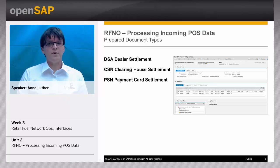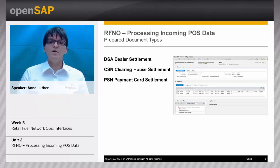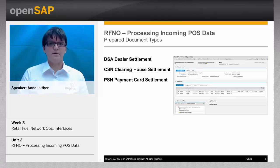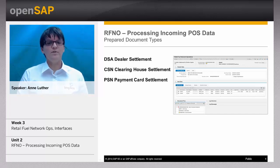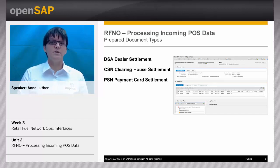Then we have the PSN document type. The PSN document is created for a settlement to a payment card customer. The invoice is addressed to the payer of the payment card contract, not to the clearing house. Here we know the customer who bought products at the service station and paid with our payment card or fleet card.